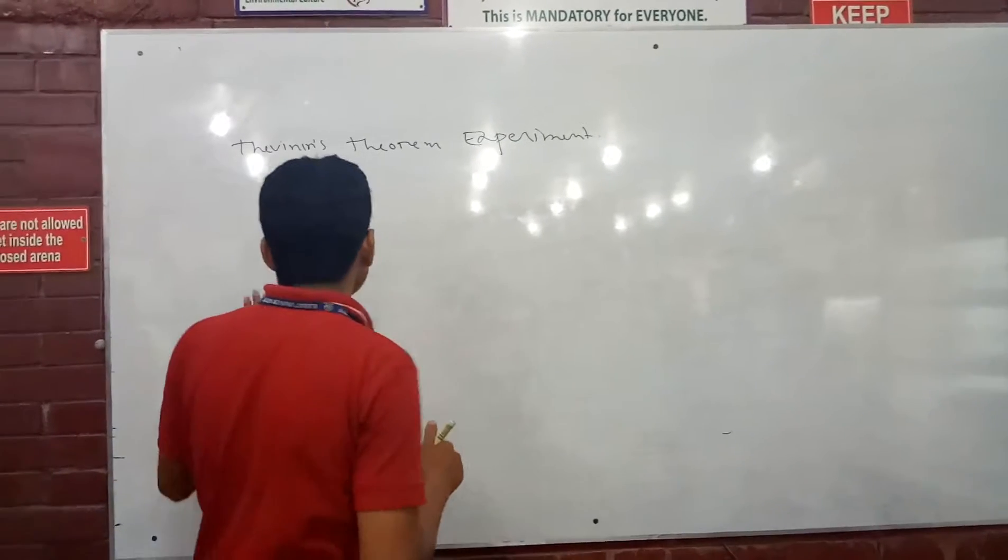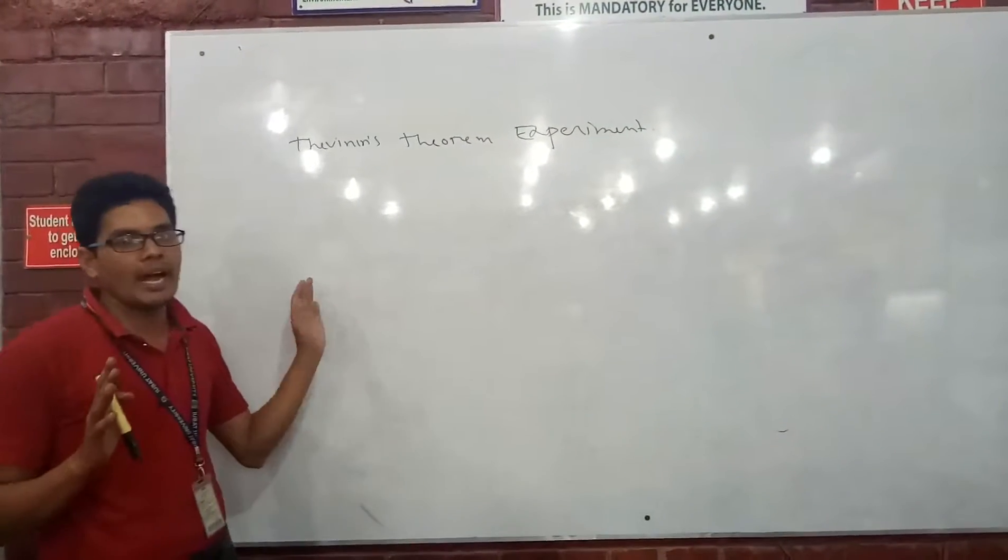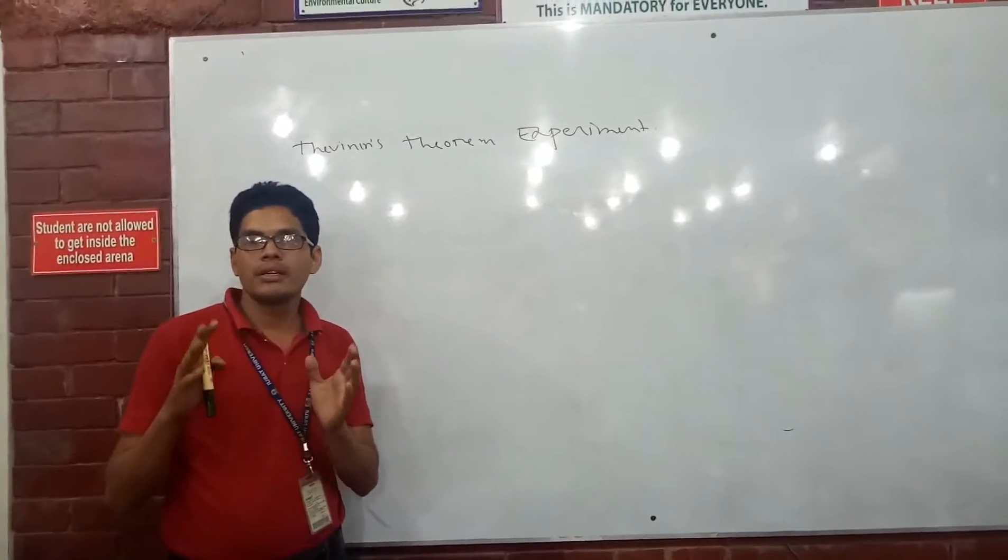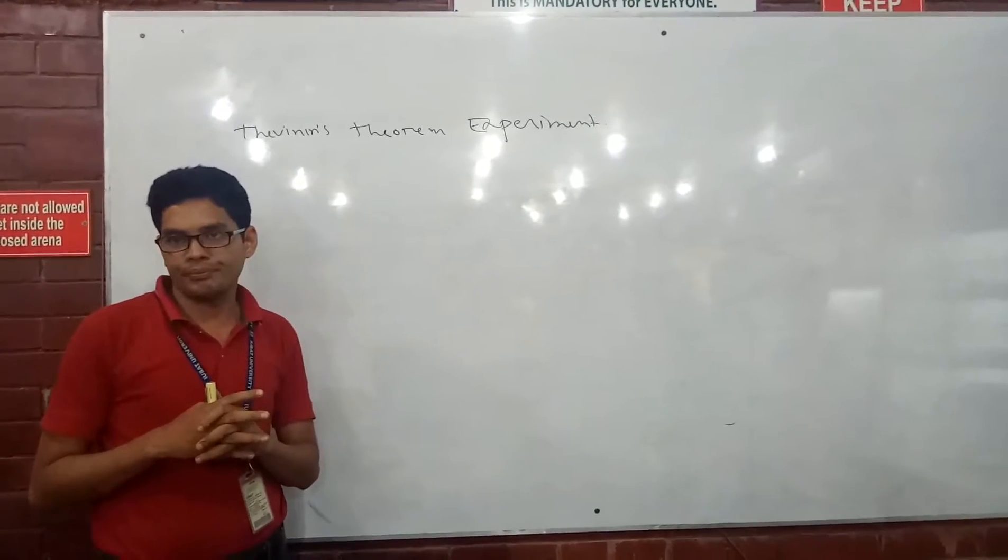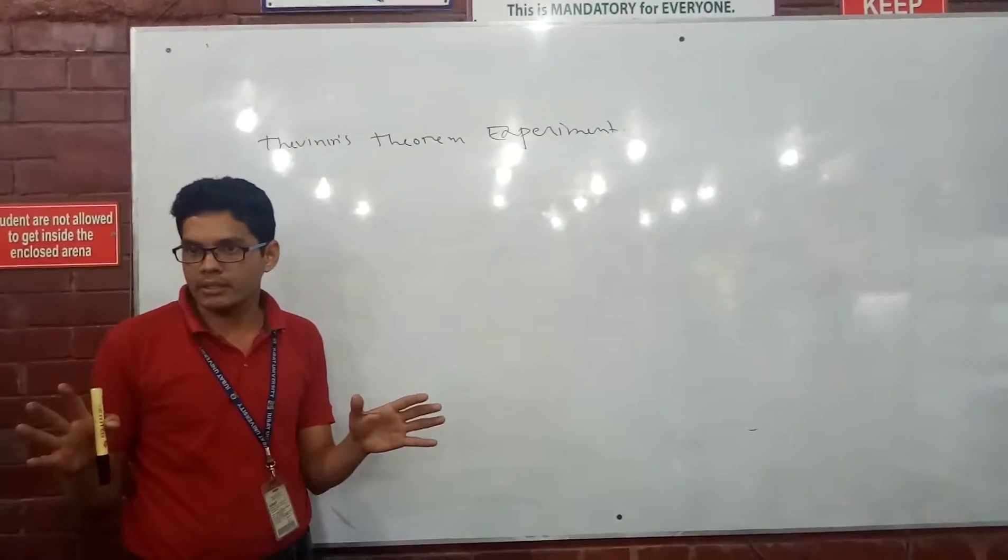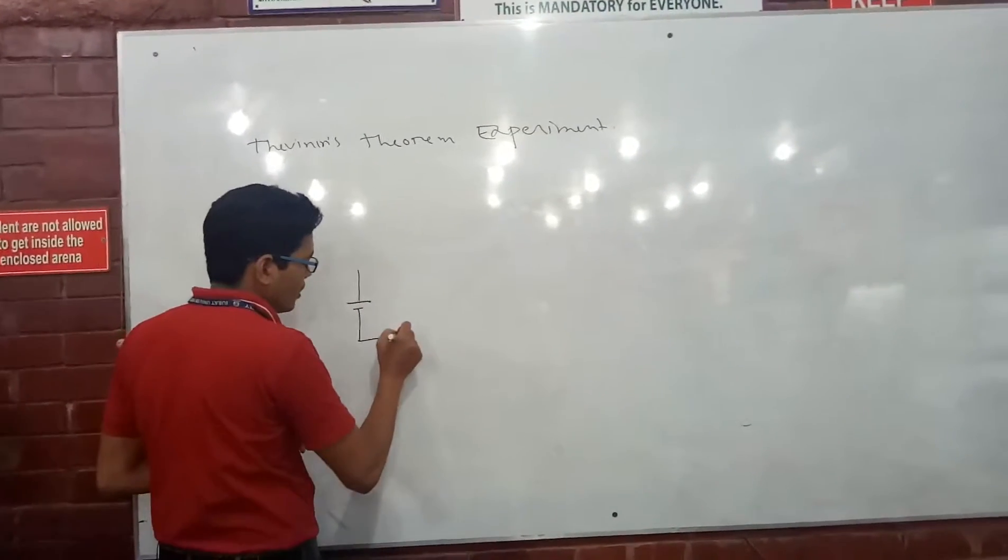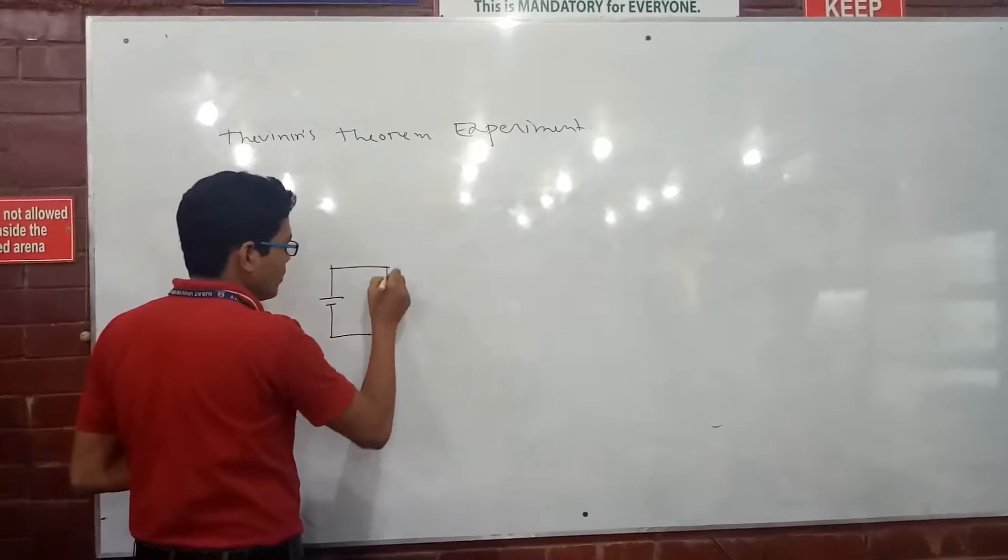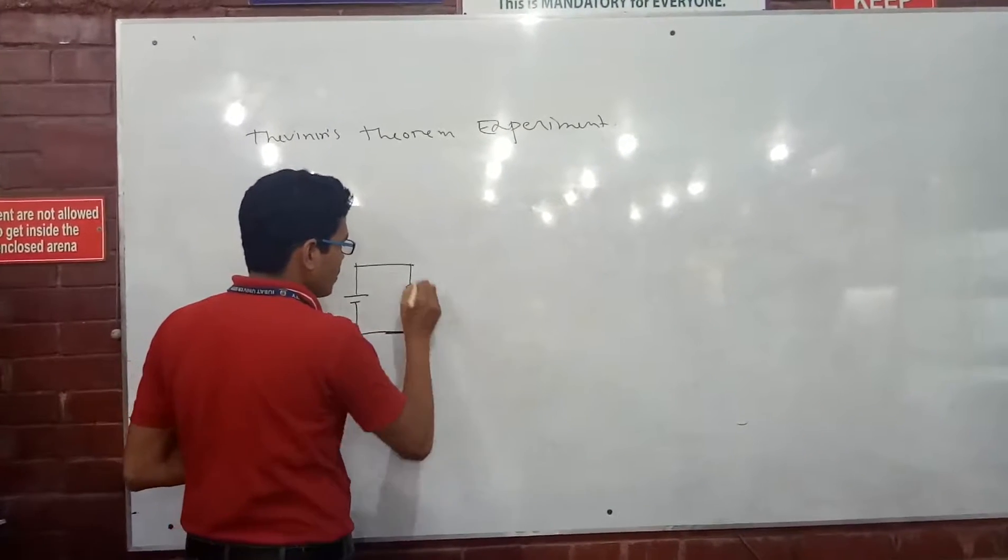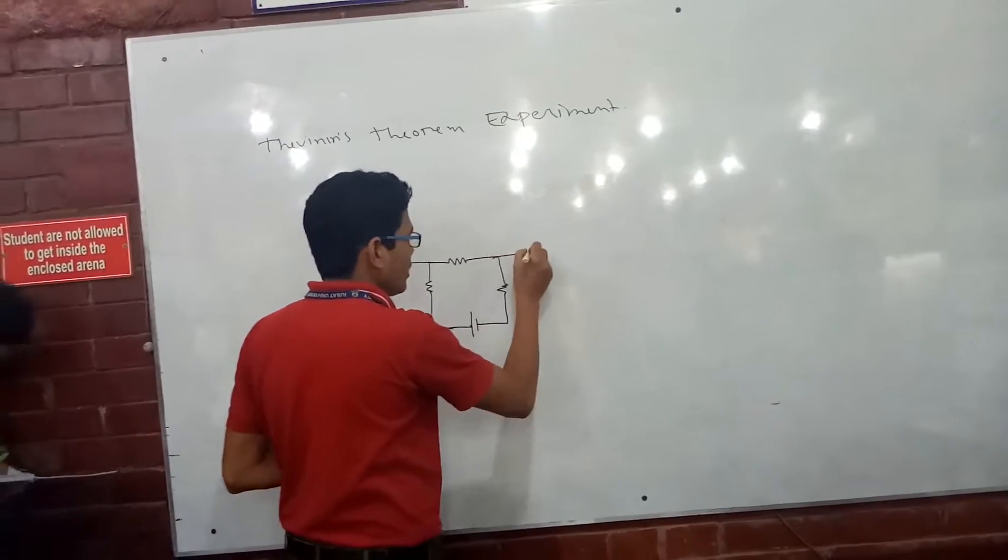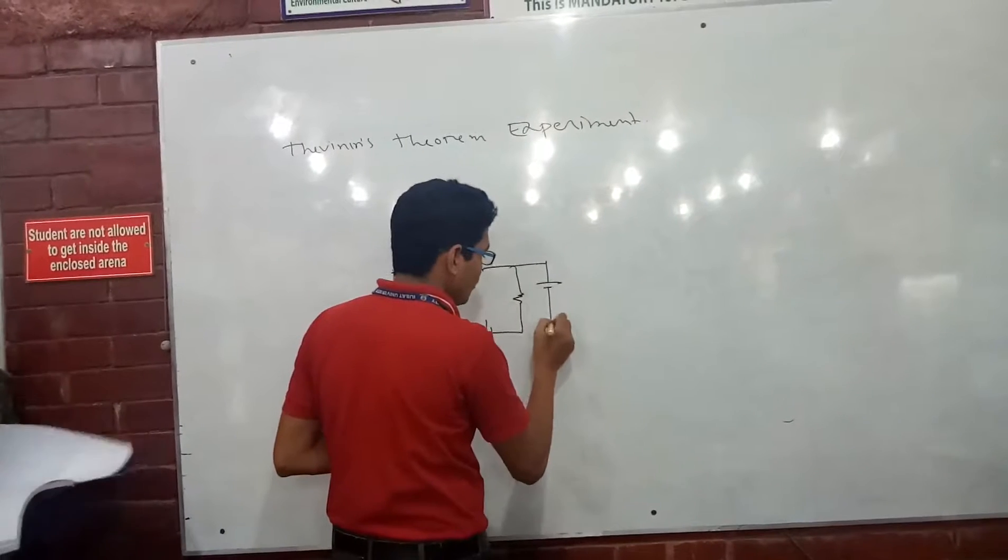In a complex network, you can find the total circuit current. If we have a circuit where there are lots of sources, resistors, and other components, and then again sources, resistors, and other things...